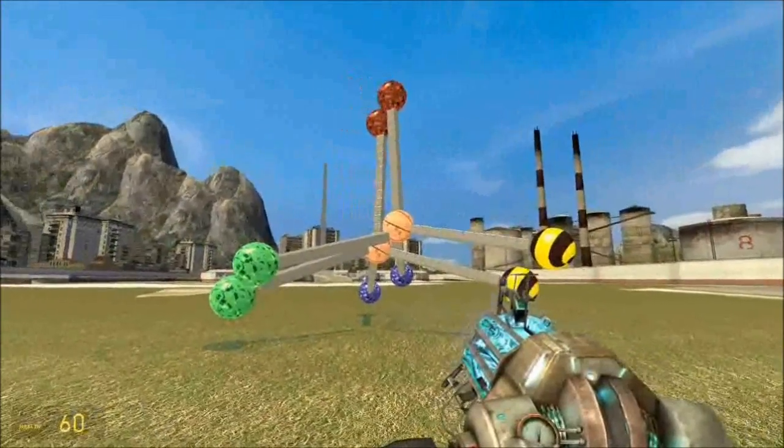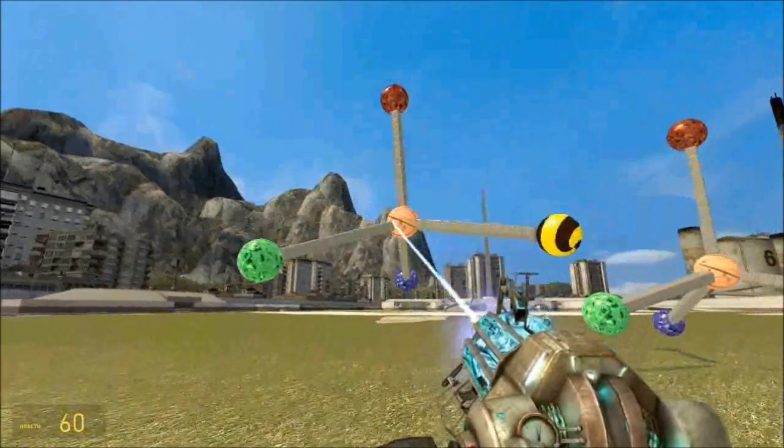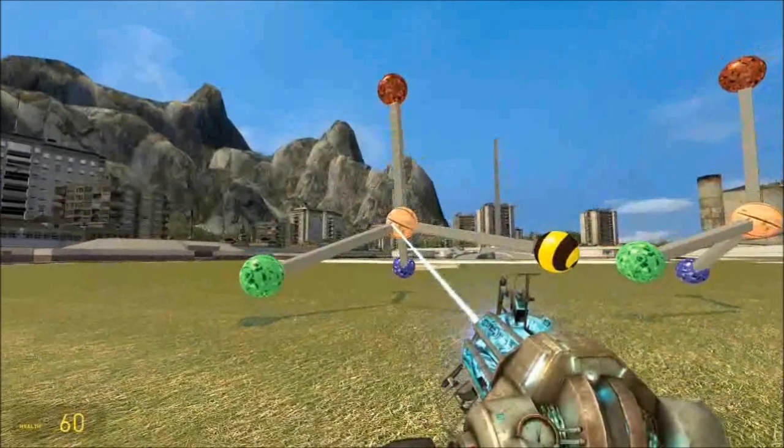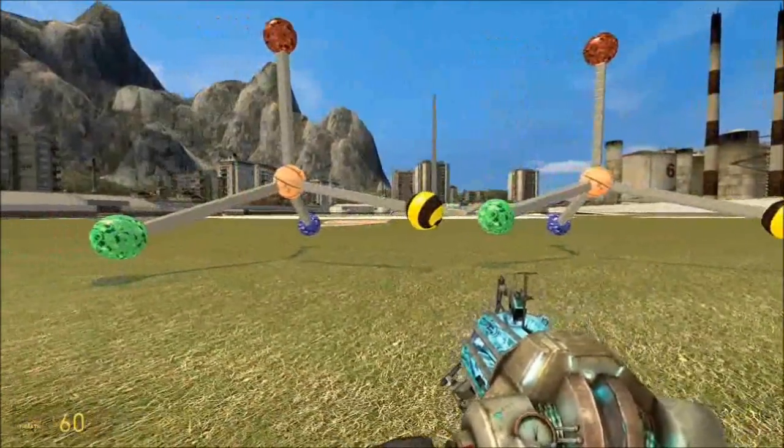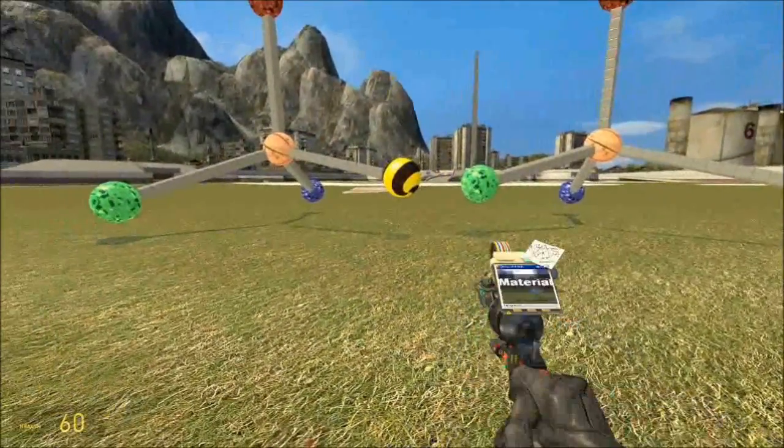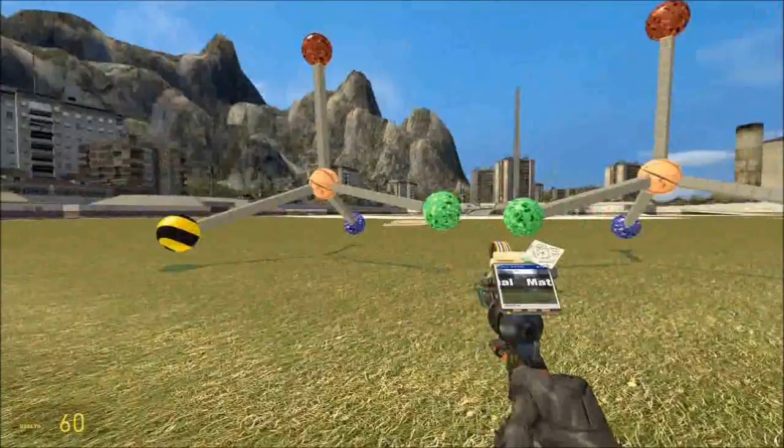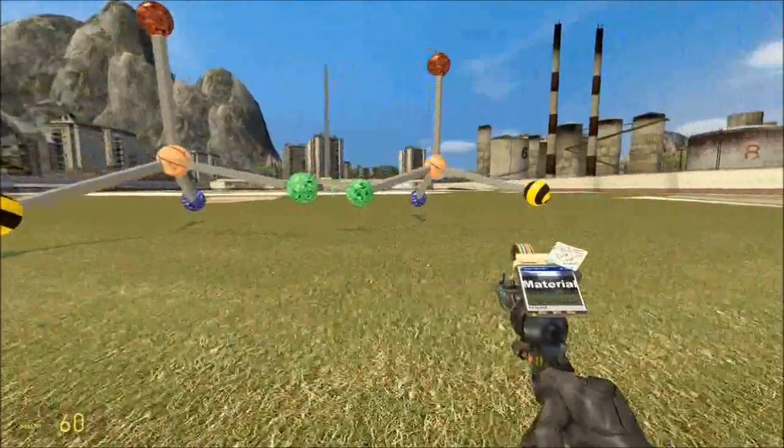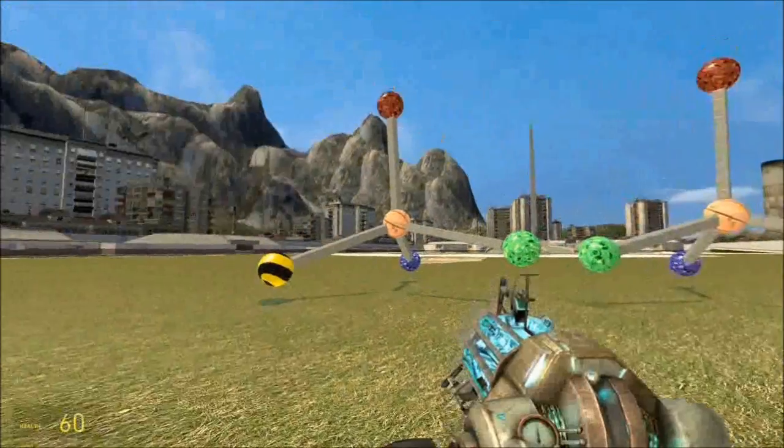Now this is not a pair of enantiomers. This is the same molecule two times. But what I need to do is I'm going to make this molecule here the mirror image. So I'm just going to change this to green, and that to stripy. Now they are mirror images of each other. A pair of enantiomers, if you will.